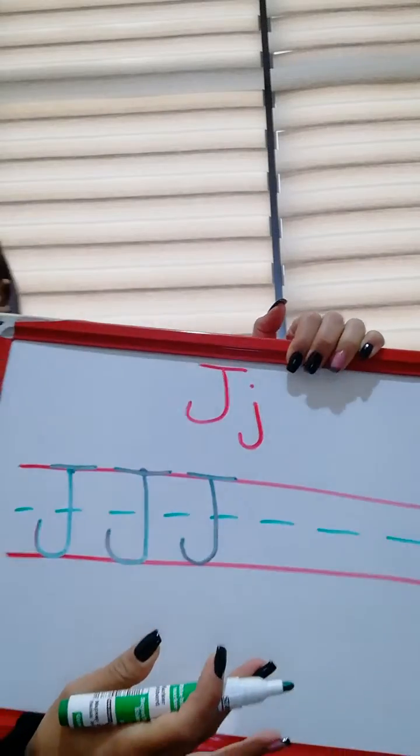Letter J is so easy. Let's write it one more time. So, we go down, straight, turn, make a curve, to the left, then add a dot.